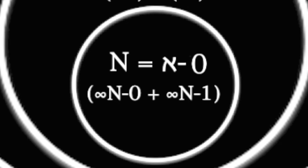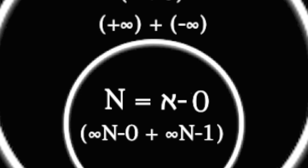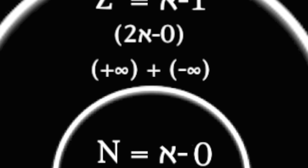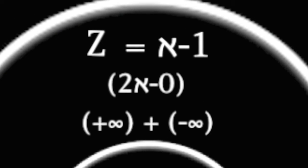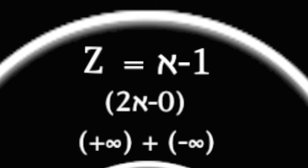The maximum 2D diameter and area integer sum is aleph sub 1, because it encompasses both positive infinity and negative infinity, and is therefore a quantitatively different sum of infinity than the natural number set, which is necessarily smaller by exactly half of positive infinity plus negative infinity. Thus, aleph null is one-half the size of aleph 1.